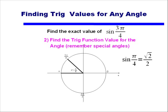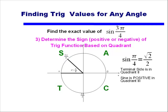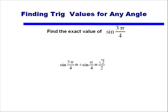Remember, π/4 is one of our special angles we need to memorize. The sine of π/4 is equal to √2/2. So now we have the trig function value for our reference angle. However, we have one more step: we have to think about whether sine is positive or negative in the quadrant that the terminal side ends up in. The terminal side is in quadrant 2, and in quadrant 2 sine is positive. So the sine of 3π/4 is equal to positive sine of π/4, or √2/2.